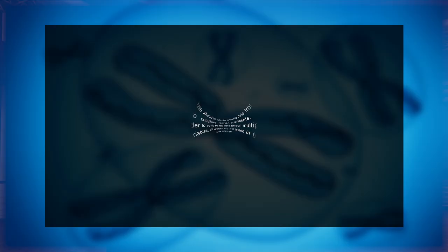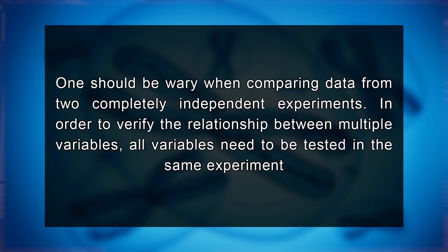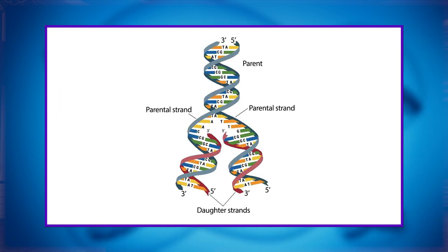However, Castell's criticisms forced Morgan and his colleagues to better describe their data and perform important experiments to clarify their hypothesis. Moreover, their response to Castell's dispute of the linear hypothesis illustrates some fundamental scientific lessons, including that one should be wary when comparing data from two completely independent experiments. In order to verify the relationship between multiple variables, all variables need to be tested in the same experiment. Since the 1919 debates, the concept of linear arrangement along the strands of DNA has held up over other models.